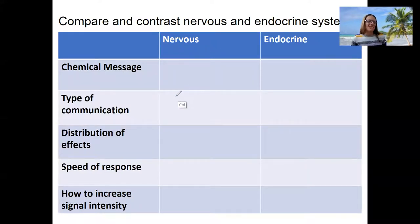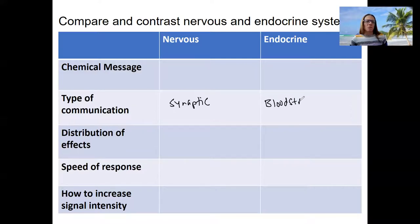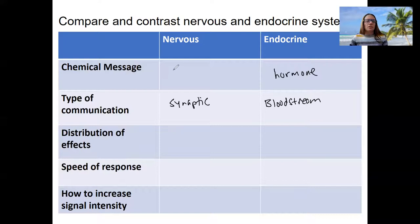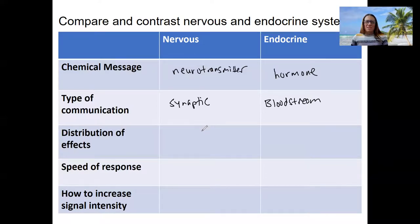The type of communication for the nervous system is going to be synaptic. For the endocrine system, it's going to be bloodstream or hormonal. The chemical message for the endocrine system is a hormone; for the nervous system it is a neurotransmitter. There are electrical synapses, but we're assuming we're talking about neurotransmitters here.